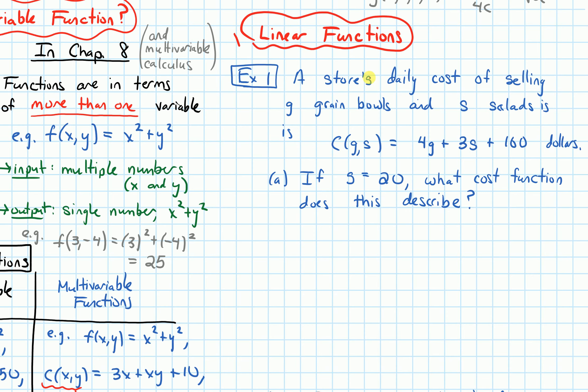So this example says, a store's daily cost of selling G grain bowls and S salads is C equals 4G plus 3S plus $160. Part A asks, if S is equal to 20, what cost function does this describe?